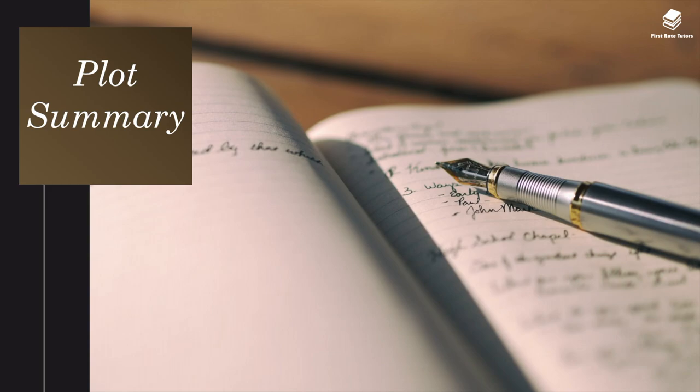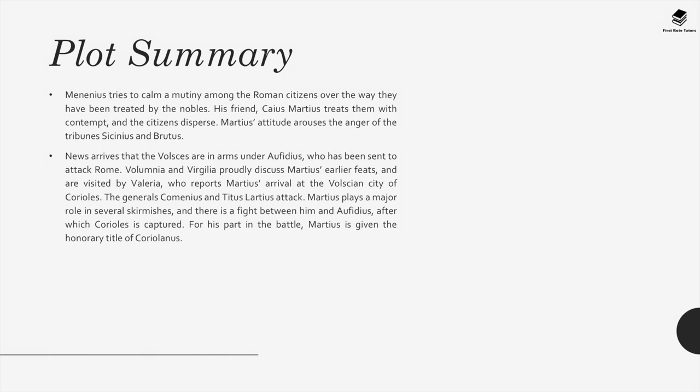In the plot summary, Menenius tries to calm a mutiny among the Roman citizens over the way they have been treated by the nobles. His friend Caius Martius treats them with contempt and the citizens disperse. Martius's attitude arouses the anger of the tribunes Sicinius and Brutus. News arrives that the Volsces are in arms under Aufidius, who has been sent to attack Rome. Volumnia and Virgilia proudly discuss Martius's earlier feats and are visited by Valeria, who reports Martius's arrival at the Volscian city of Corioles. The generals Cominius and Titus Lartius attack, Martius plays a major role in several skirmishes, there is a fight between him and Aufidius, after which Corioles is captured.